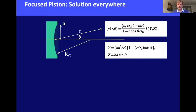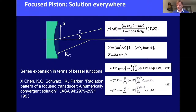For the pressure field everywhere from a focused piston, an approximate solution exists. At angle θ and radial distance r from the transducer center, the pressure is written in terms of an integral I that depends on transform variables Y (function of r and θ) and Z (function of θ alone). I itself can be expressed as a sum of Bessel functions with real and imaginary parts, converging nicely. This is described in detail by Chen, Schwartz, and Parker, and allows the full pressure field to be computed anywhere.